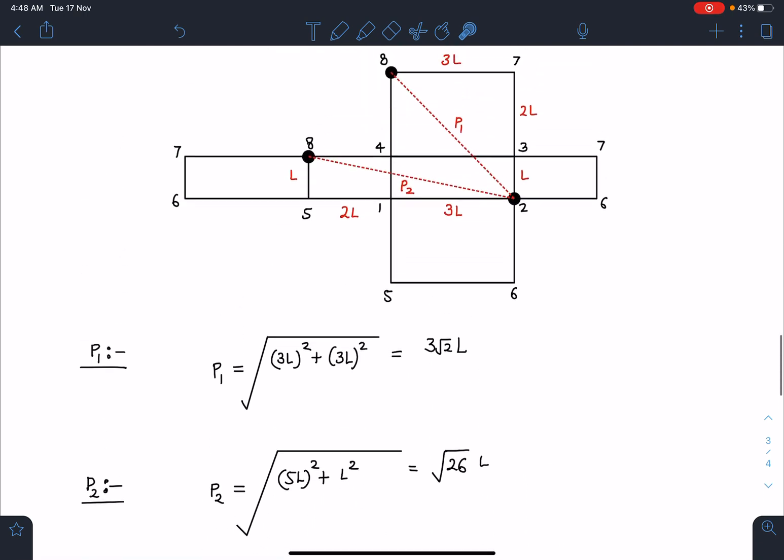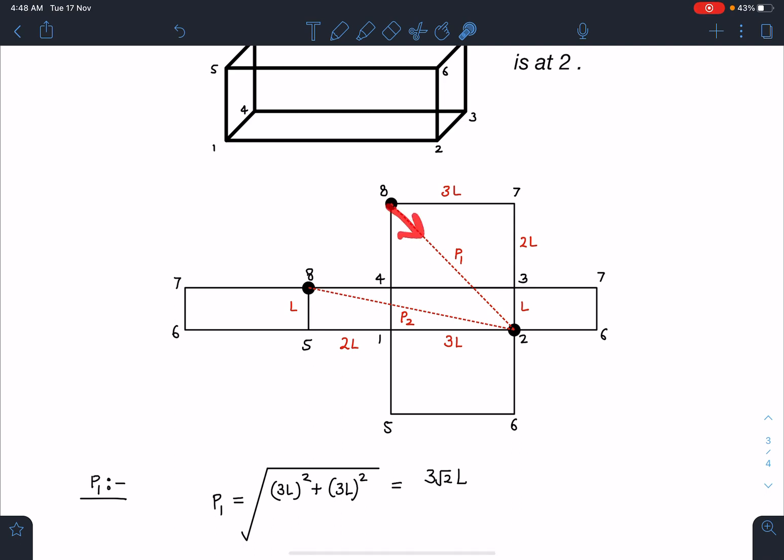Another modification which we can do in this problem is one of them is moving with acceleration A₁, another one is moving with acceleration A₂. Then 3√2L equals half A relative T squared and I can calculate minimum time. Or one is moving with V₀, another one is moving with A₀. Then we can apply S equals V₀T plus half AT squared. Other possible variations can be that they are moving with variable acceleration. They are going to move along this path and all the questions with straight line motion can be used here for minimum time.